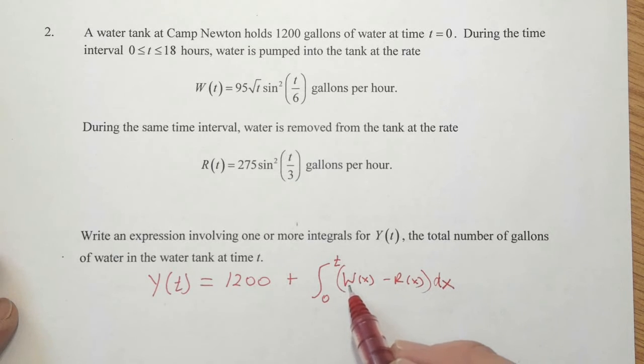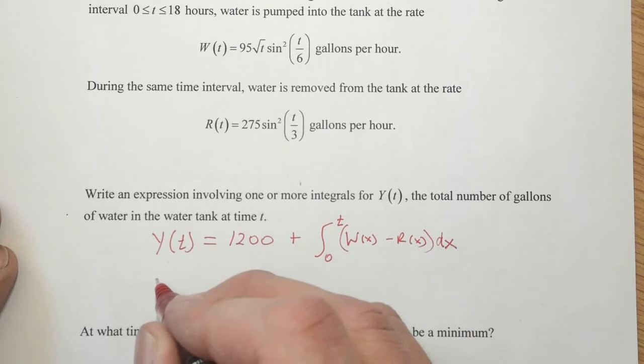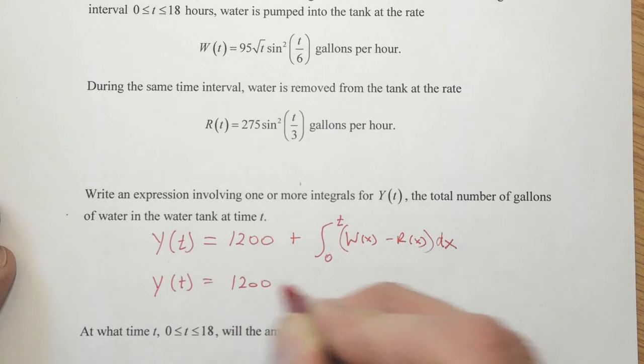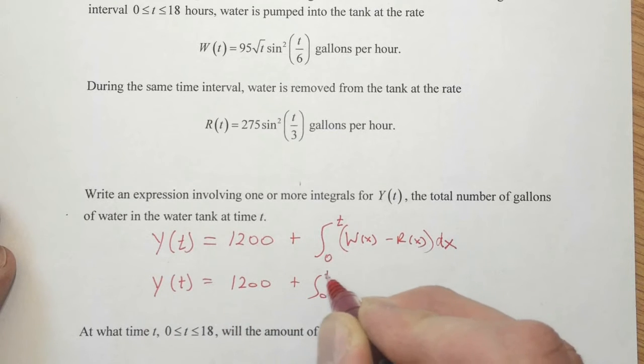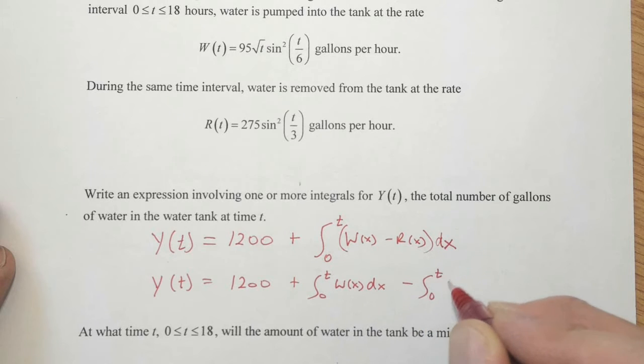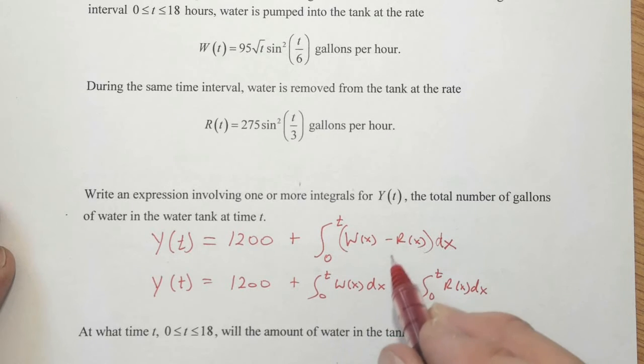All right, and the W is positive because that's water going in, and the R is negative because that's water going out. That works. So you can have Y(t) equals 1,200 plus the integral from zero to T of W(x) dx minus the integral from zero to T of R(x) dx. This is the one and the same because we know that we can break up an integral as long as the two items are separated by addition or subtraction. So you can write it either way. You can get full credit either way.